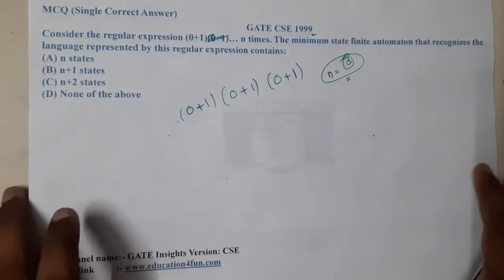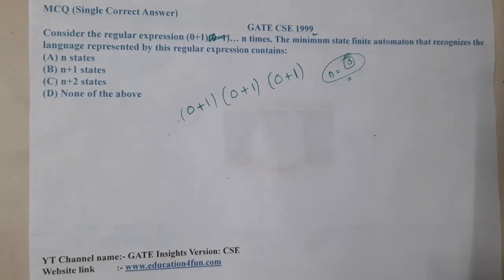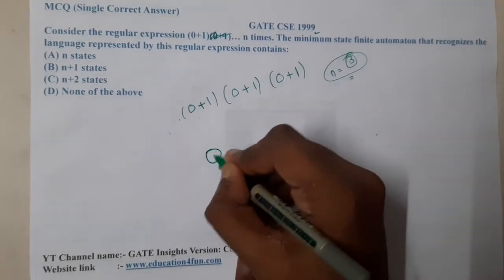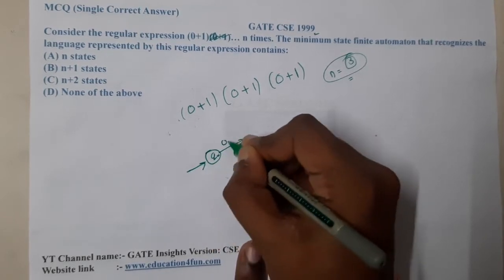So if n equals 3, to recognize this machine how many states do I need? It's a direct thing. You will start from q0, so either you might have 0 or 1, you go to q1...